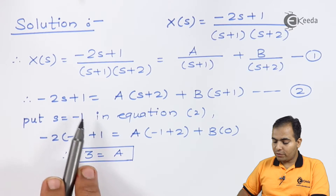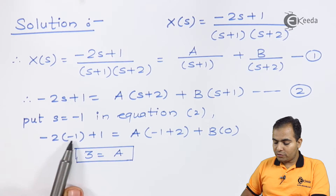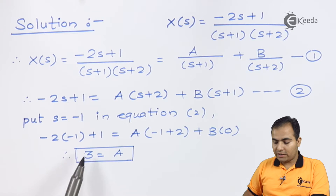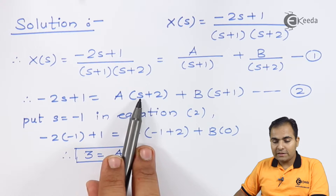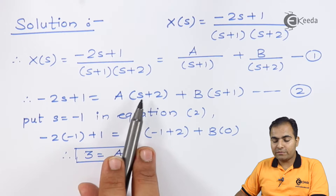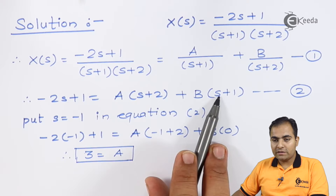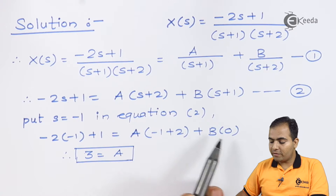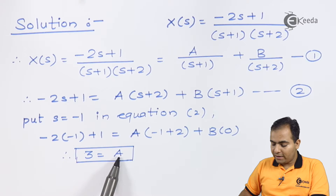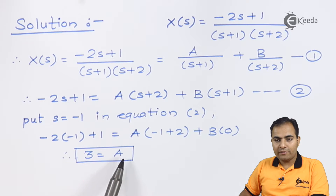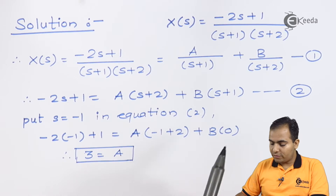After replacing s by -1: on the left-hand side, -2(-1) + 1 = 2 + 1 = 3. On the right side, (s+2) becomes -1 + 2 = 1, and the B term becomes zero. So A multiplied by 1 equals 3, giving A = 3.